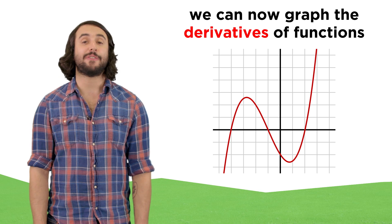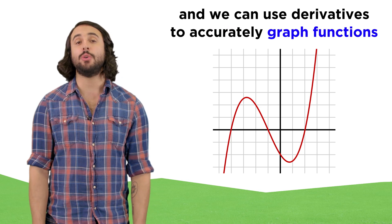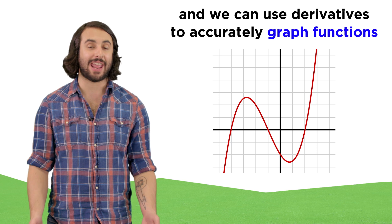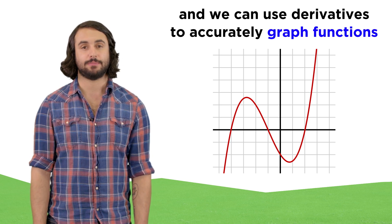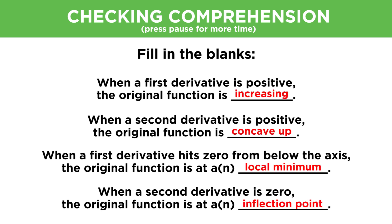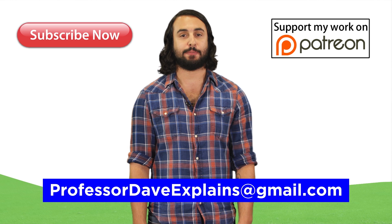Our understanding of derivatives should make it fairly easy to graph first and second derivatives of functions simply by looking at a function. And as we just saw, we can use information about the first and second derivatives to help us accurately graph higher degree polynomials with more precision than we were previously able to. This is a very important concept, so let's check comprehension. Feel free to email me at professordaveexplains@gmail.com.